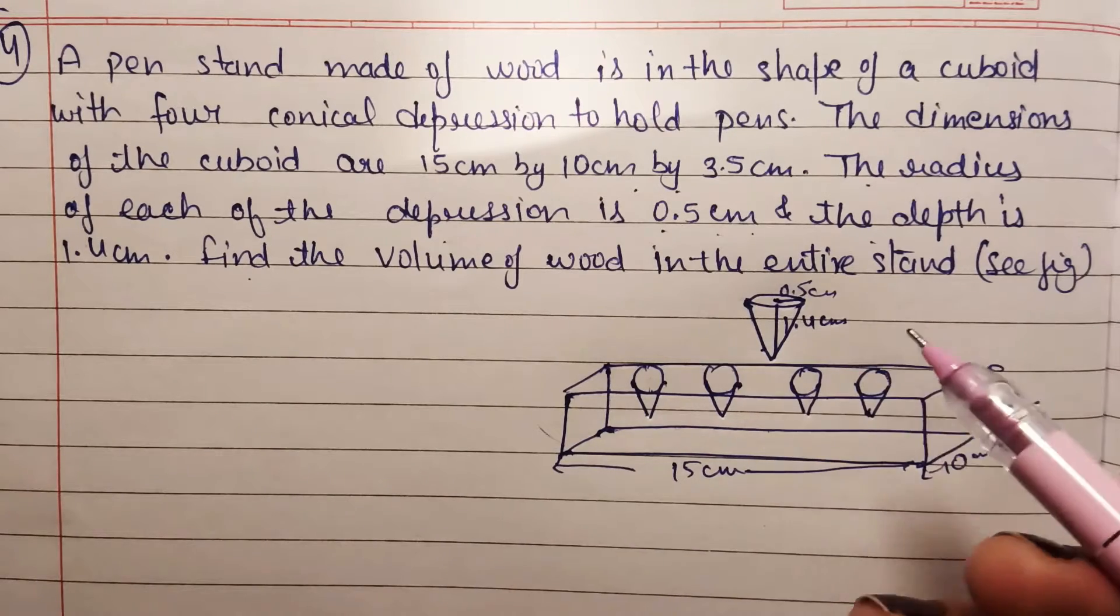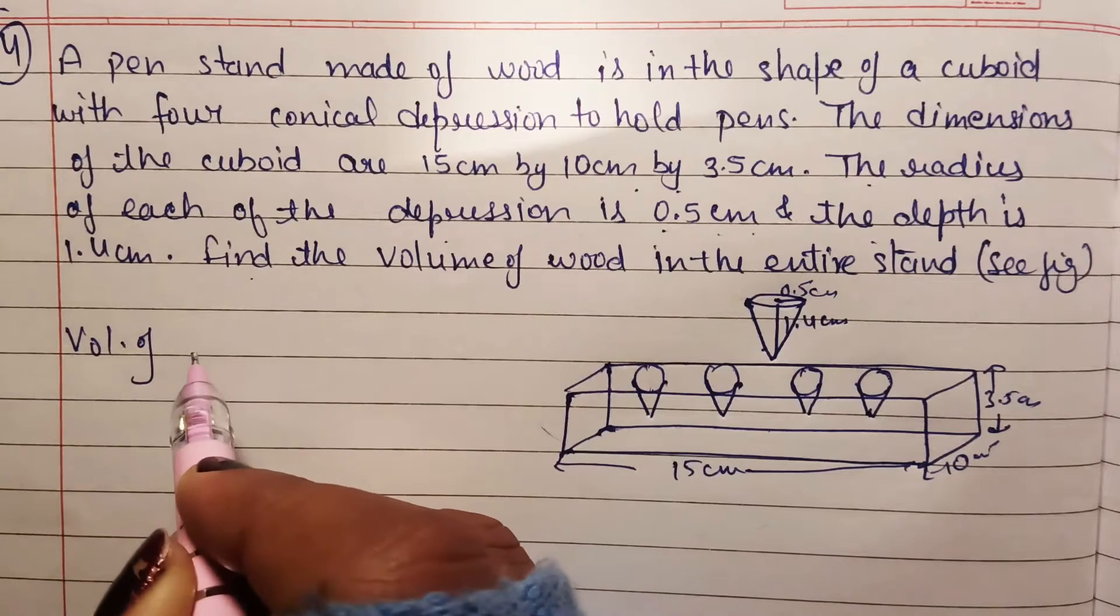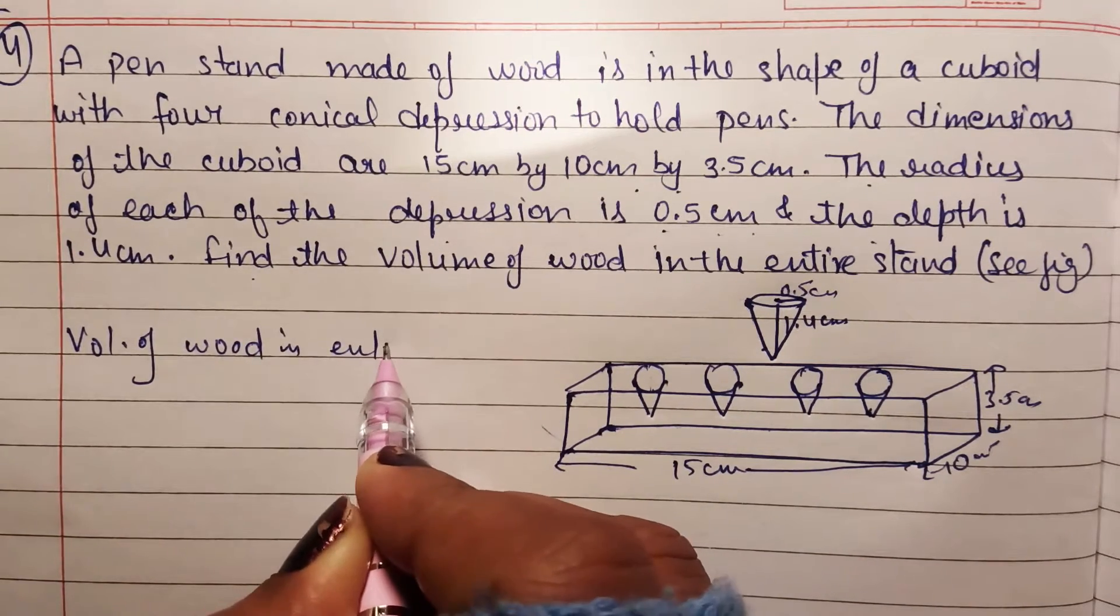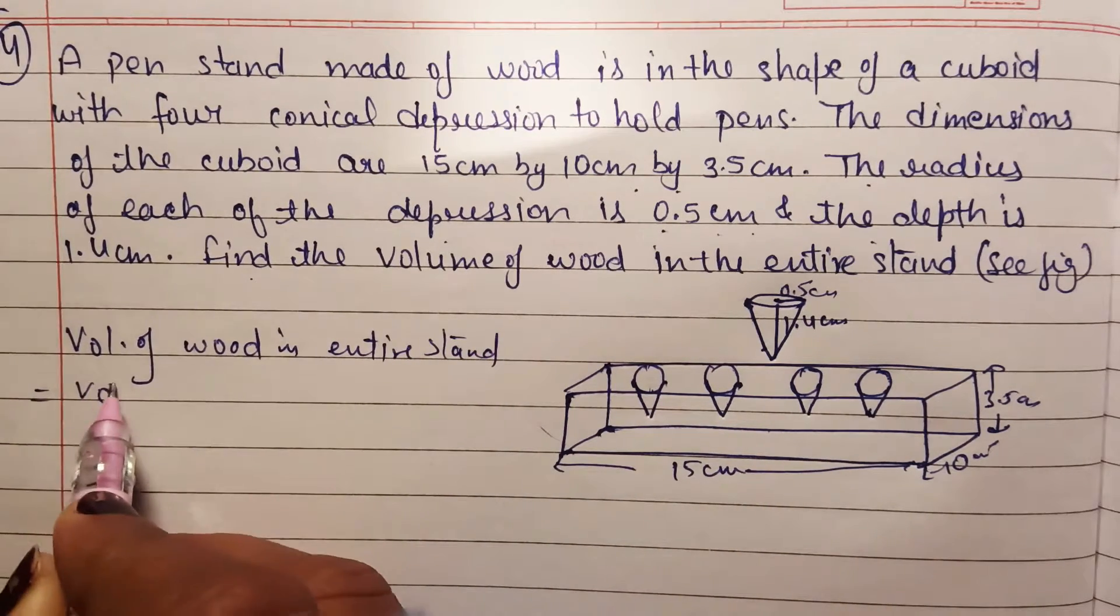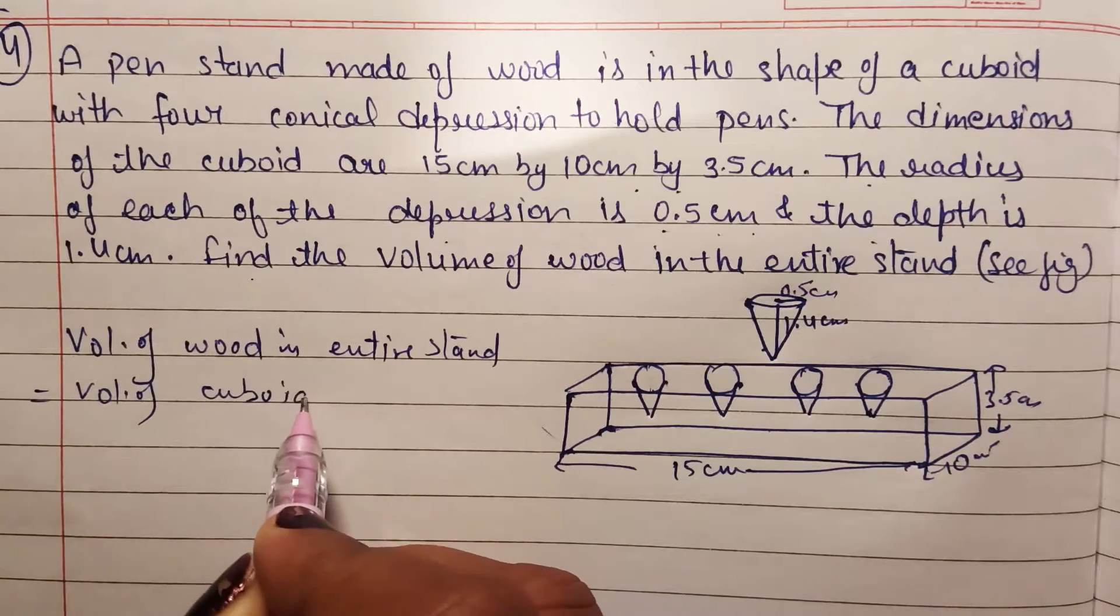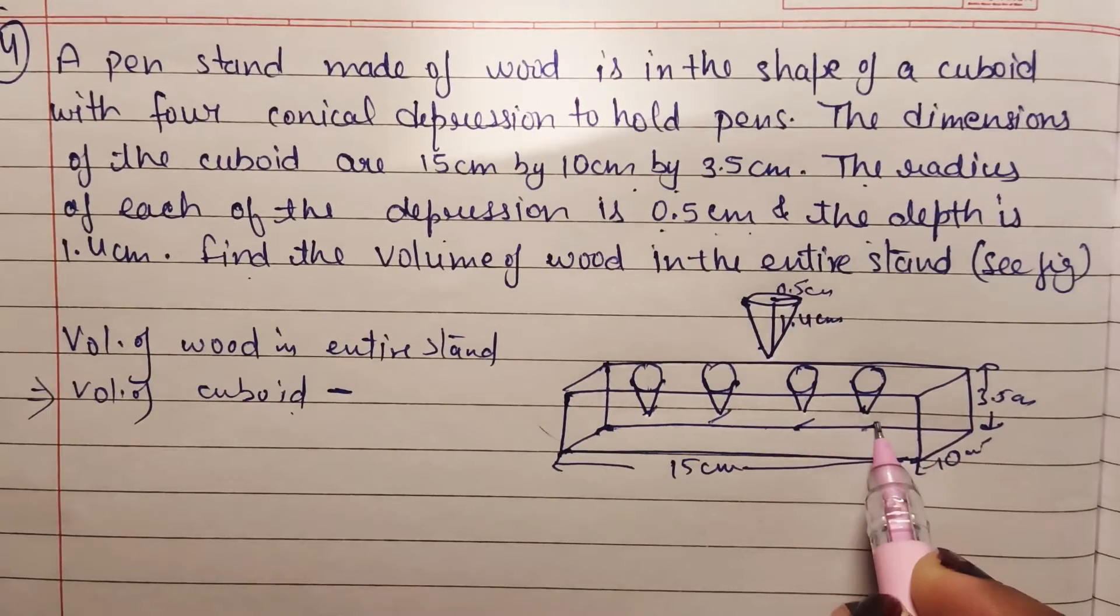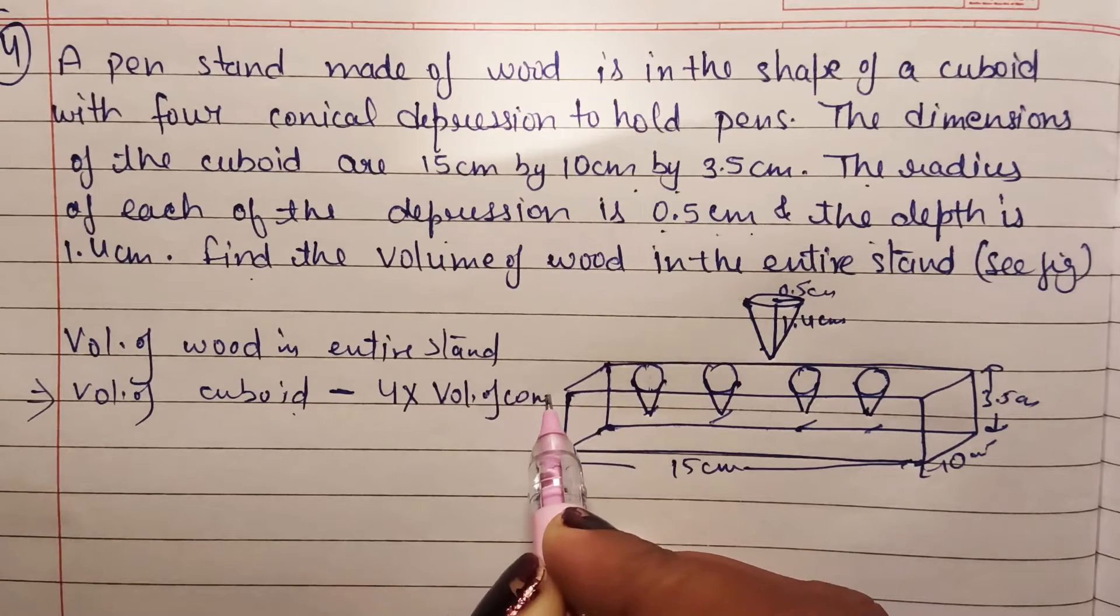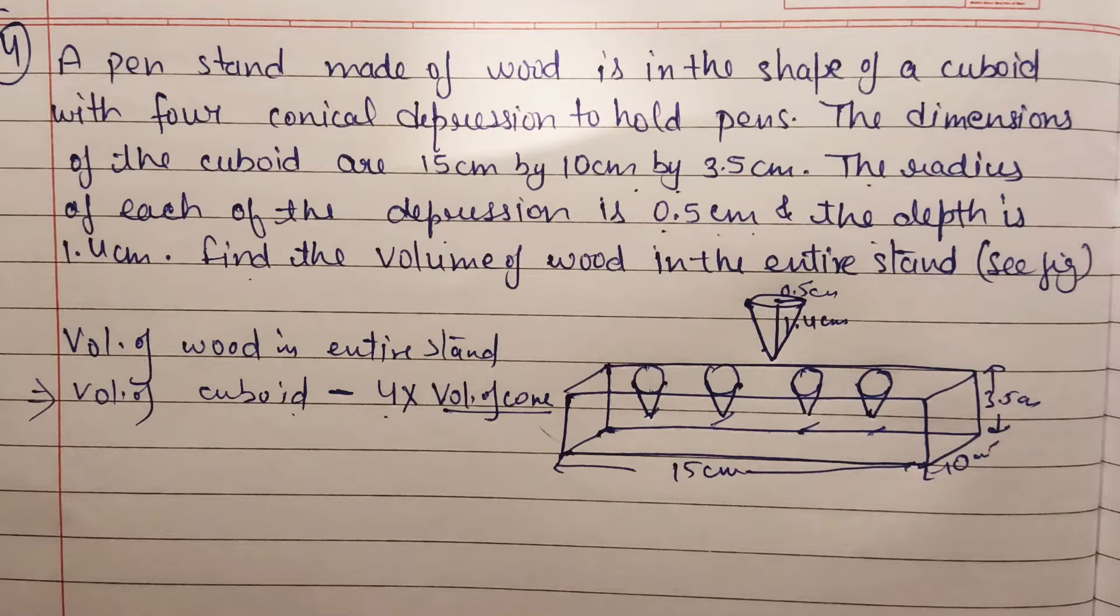This depression, conical depression which is there, how it has been made? This much wood has been taken out and thrown away, so that will be subtracted. So it will be: volume of cuboid minus what? These four cones' volume. I can write here: four into volume of cone. The cone's volume, multiply with four because four depressions. All have same volume and depth, so volume will also be same.